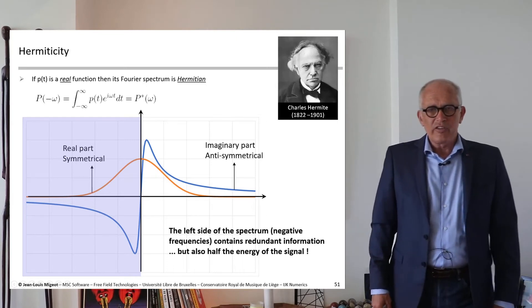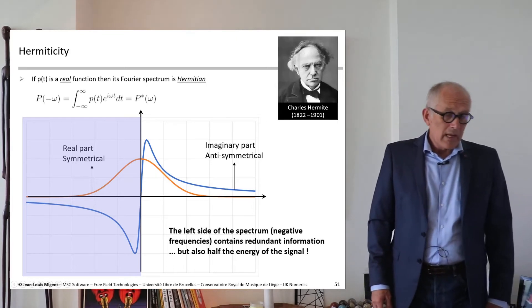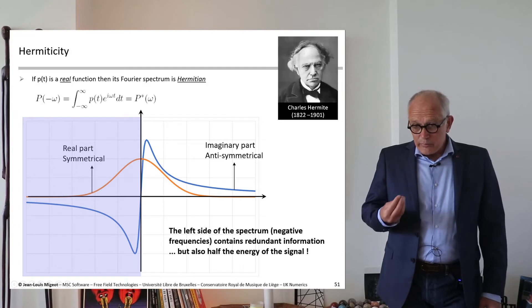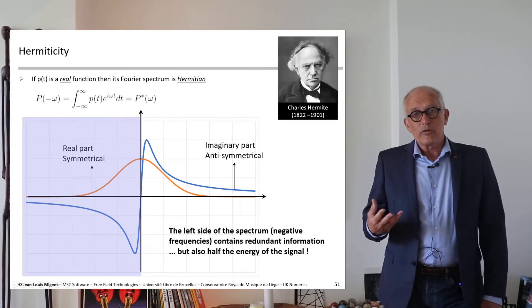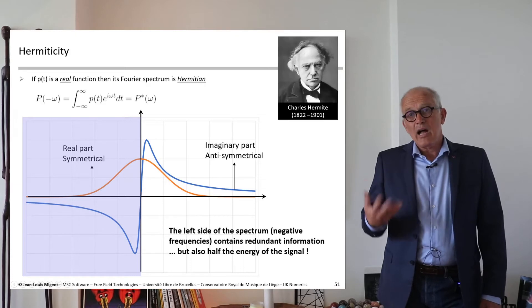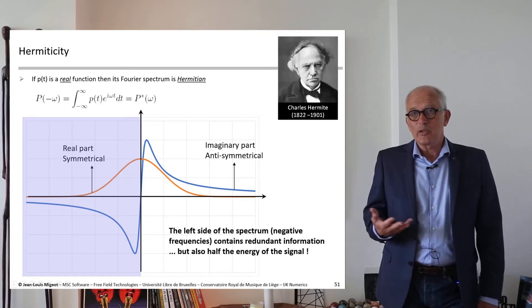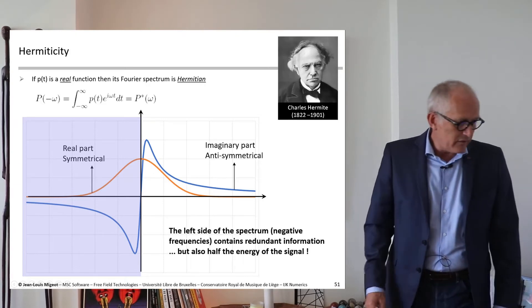Because if we only had the right side of the spectrum, we could reconstruct the entire spectrum. The information is redundant, but still it carries half the energy of the signal and cannot be just plainly disregarded.